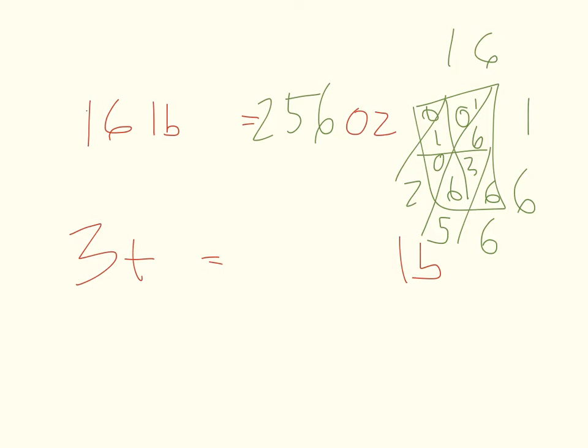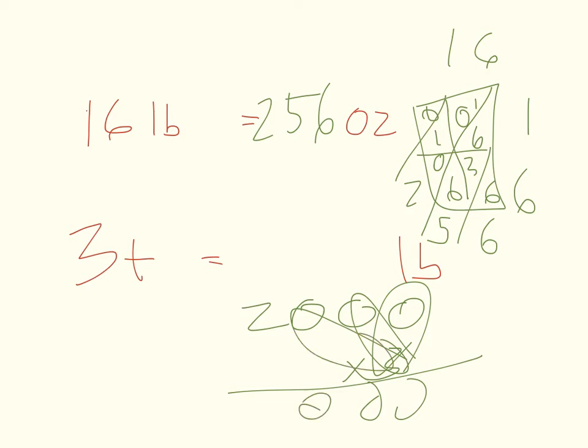so 256 ounces in 16 pounds. Now, 3 tons, I know that there's 2,000 pounds in a ton. So 2,000 times 3, 0, 0, 0, and then 6. I could have saved myself some time and just done 3 times 2 and then added three zeros, but sometimes I like to work it out. So that would be 6,000 pounds. Pretty straightforward.